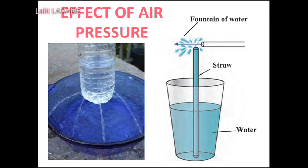As the pressure of the air near the upper end of the erect straw becomes less than atmospheric pressure, the water in the cup is pushed from where the pressure is higher to where it is lower, that is, in the upward direction, and the water comes out in the form of a fountain. The more forcefully you blow, the higher will be the fountain. The straw fountain works on Bernoulli's principle.